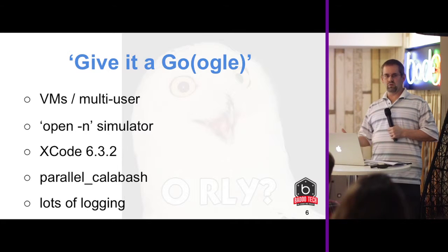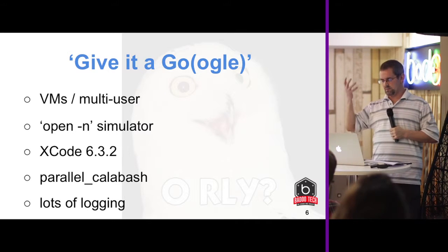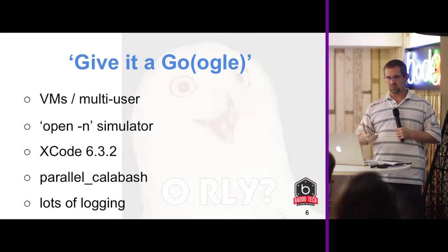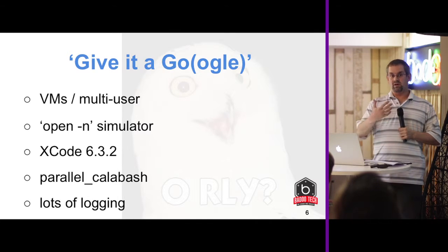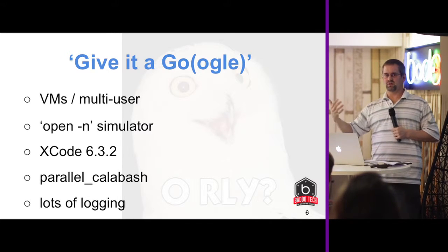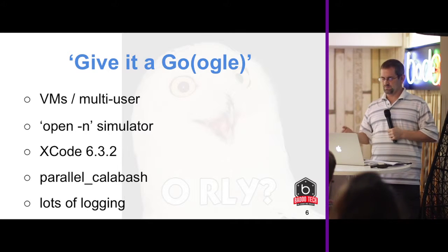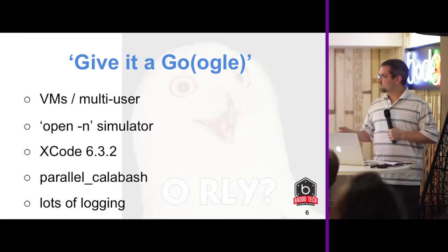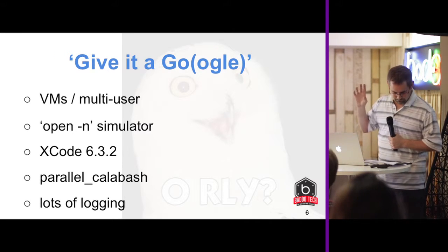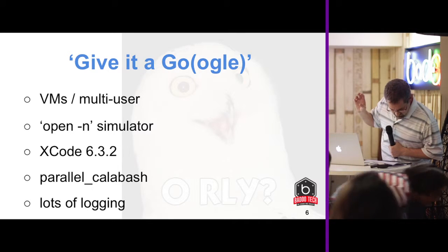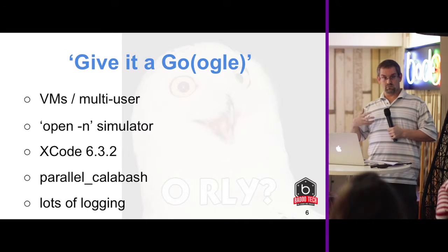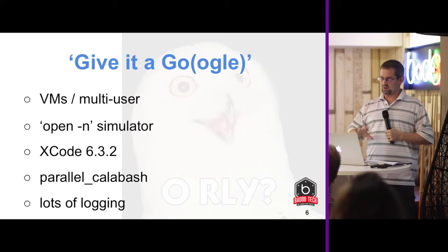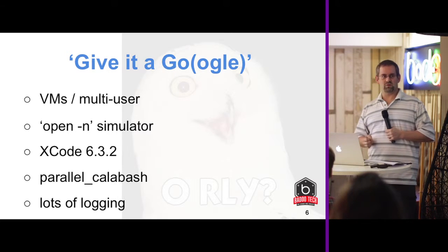It's fairly simple to spin up two simulators now — you open them with the minus N option and they come up, which is great. But unfortunately, Calabash uses AppleScript, so it expects there to be only one simulator. So if you have two simulators open on the same desktop, it gets confused. Similarly, with Xcode 6.3.2, the instruments command can actually be used for multiple devices at the same time, but this was an unannounced change that Apple made, so it could break at any time. But it seems to work for the time being, so that's good.